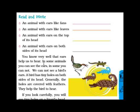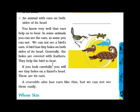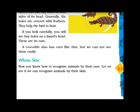You know very well that ears help us to hear. In some animals you can see the ears, in some you cannot. We cannot see a bird's ears. A bird has tiny holes on both sides of the head; generally the holes are covered with feathers, and they help the bird to hear. If you look carefully, you will see tiny holes on a lizard's head — these are its ears. A crocodile also has ears, but we cannot see them easily.